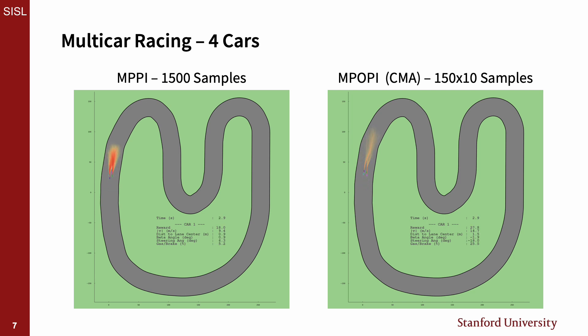This visualization has MPOPI using covariance matrix adaptation controlling four cars, where the cars are incentivized for being close together near the middle of the track and going fast. Both algorithms are using the same number of effective samples.